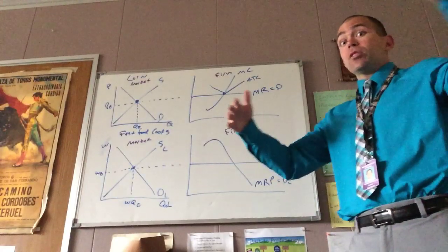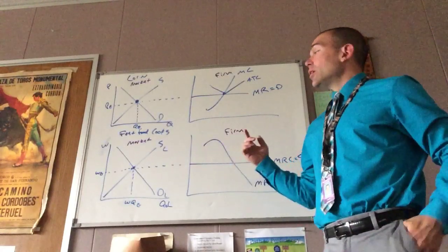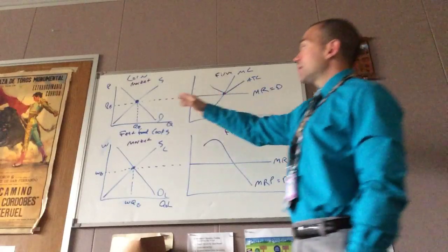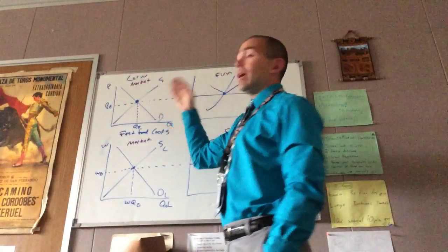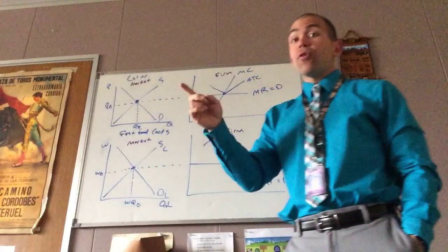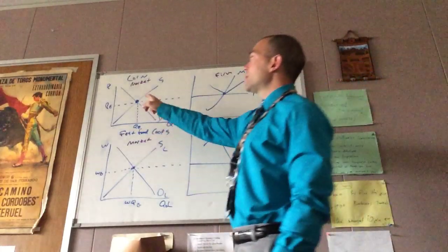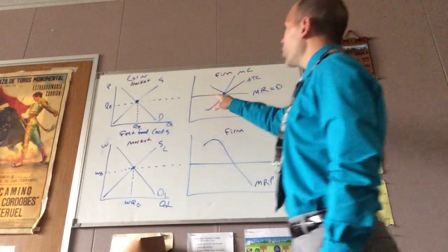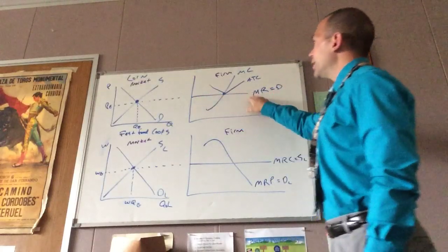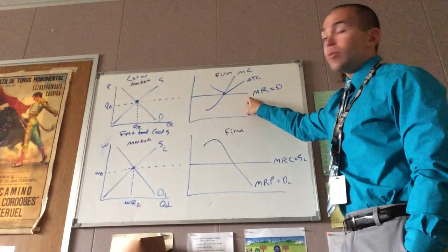There's no product differentiation, and the quantity is a ton. So the market supply and the market demand sets the price for the individual firm. And this carries that over and creates and sets the marginal revenue for the individual firm.